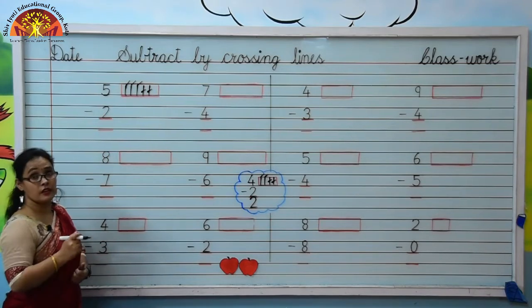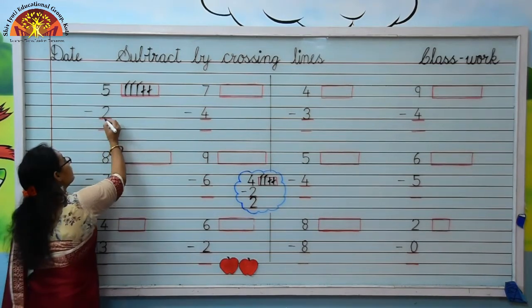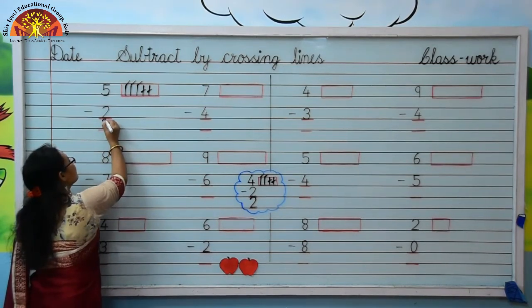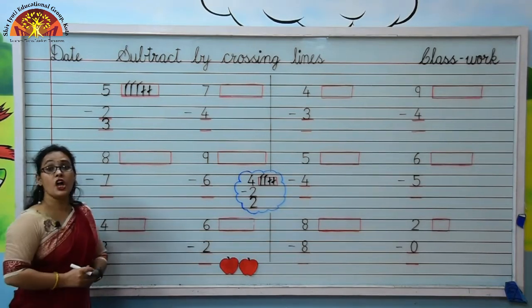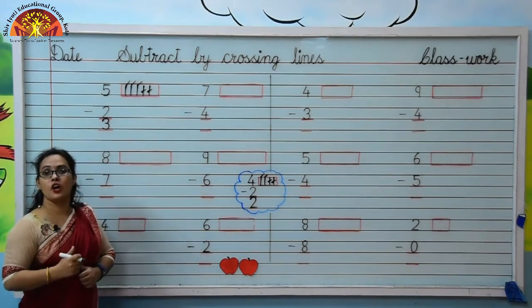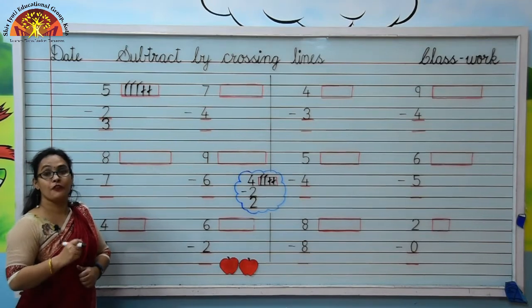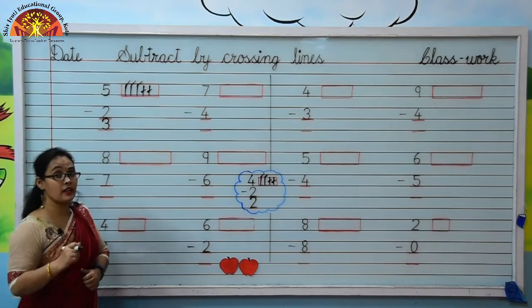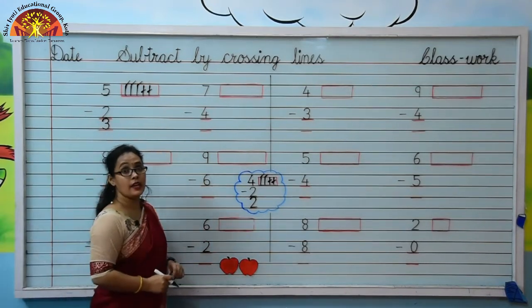3 lines are there. Kids, your answer is 3. You have to draw and cross lines like this with a red color pencil. Move to next.